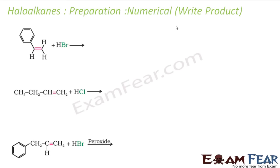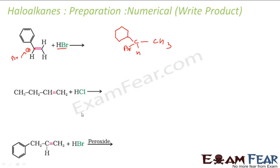Let us take some numericals now — we will write the product. In this case, the moment you add HBr, since you are not using peroxide, you will follow Markovnikov's rule. Which one is the more stable carbocation? This carbon, if it gets a plus charge, is a more stable carbocation — it is a secondary carbon with two carbons attached. The other is only a primary carbon. So BR− will attack the secondary carbocation, and the product has to be C(Br)H-CH3. This is also an electrophilic addition reaction.